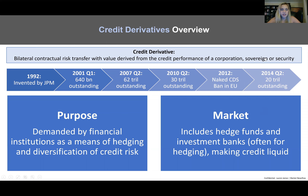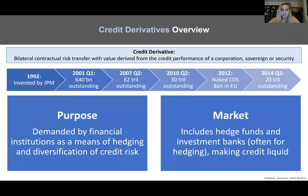A credit derivative is, as the name would entail, a derivative — meaning it's a bilateral contractual risk transfer with value derived from the credit performance of a corporation, sovereign, or security. In plain English, you are basically exchanging risk with someone else and getting some sort of payoff. It's like insurance: you give a periodic payment, and if something goes wrong the other counterparty makes a larger payment.